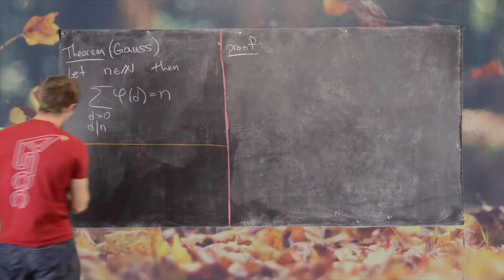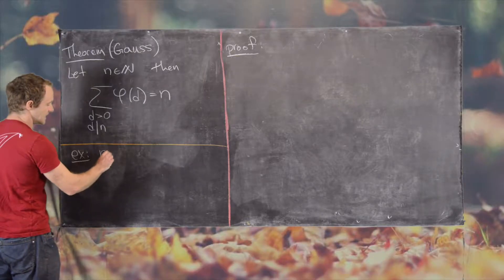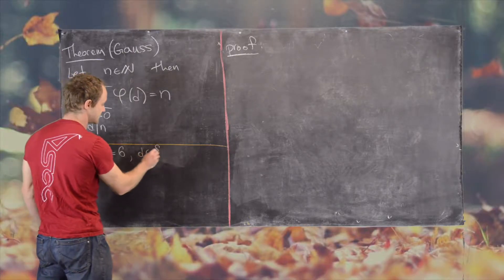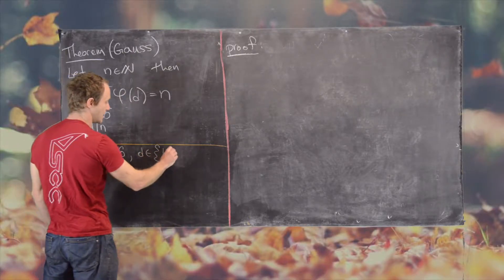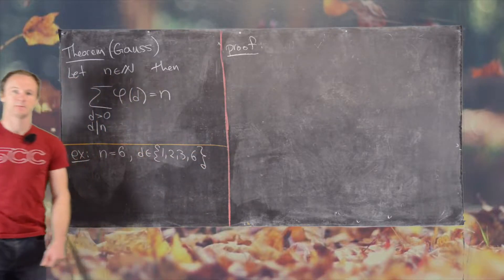Before we look at a proof, let's look at a pretty simple example. So let's take n equals 6, and so that means the d's that will be in our set will be 1, 2, 3, and 6.